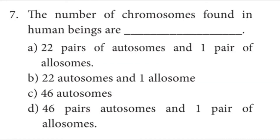Seventh question: the number of chromosomes found in human beings is dash. Answer is A option — 22 pairs of autosomes and one pair of allosomes.